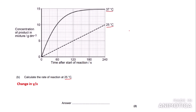We need to figure out the change in y and change in x. The change in y is 10, because the concentration of product goes from 0 to 10 over the experiment. The change in the x-axis is 240. So we do 10 divided by 240, which equals 0.0416. The examiner prefers fewer decimal places, so a general rule of thumb is to use two decimal places — giving us 0.04.